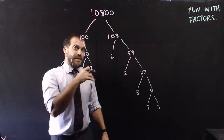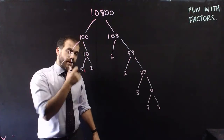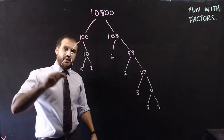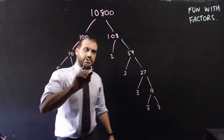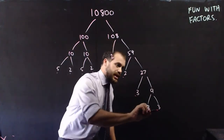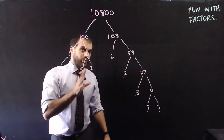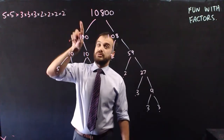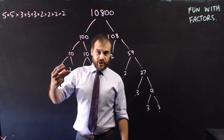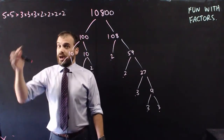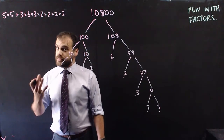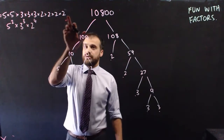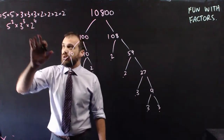What I have here is a prime factor tree, and this means I can express 10,800 as all these prime factors multiplied together. So I'm left with 5 times 5, times 3 times 3 times 3, times 2 times 2 times 2 times 2. And you can express that using powers: 5 squared times 3 cubed times 2 to the 4.